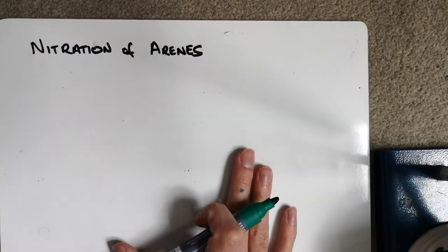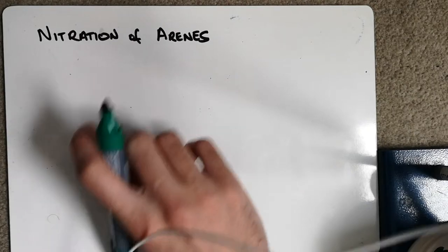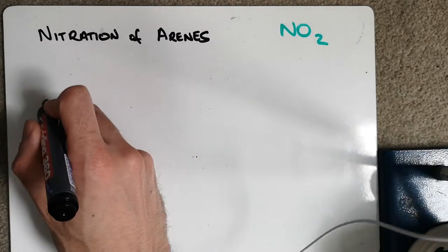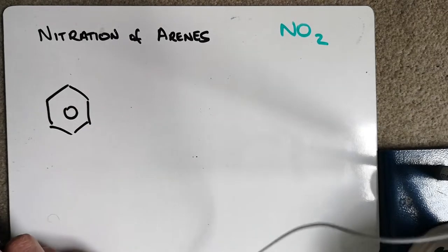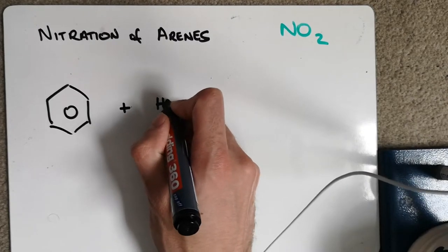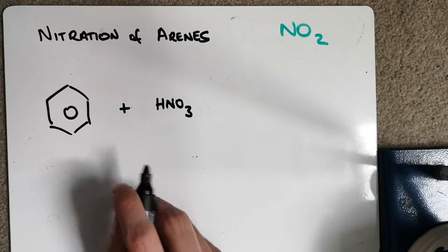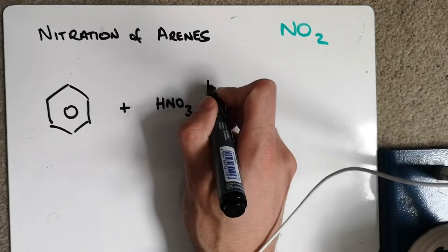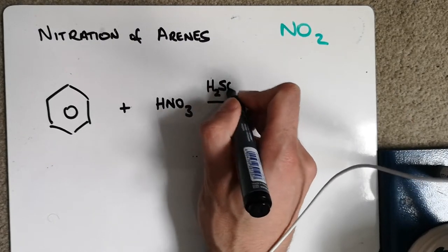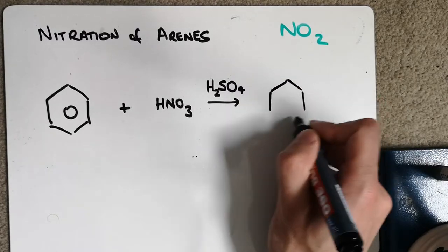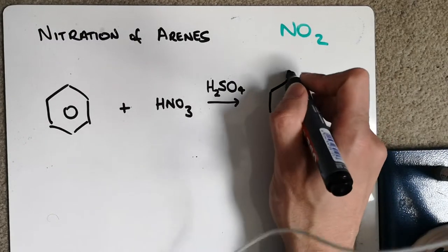So the first reaction of arenes we're going to look at is the nitration of arenes. We're going to add a nitro group on. Now a nitro group is NO2. So in these reactions, I'm going to start with benzene and react it with nitric acid. The nitric acid is where this NO2 is going to come from. We need a catalyst, and in all these arene reactions we're going to need a catalyst. In this case, I'm going to use sulfuric acid. That's my catalyst.